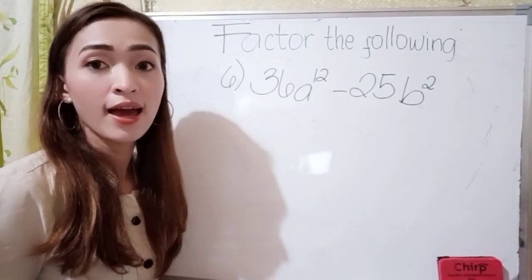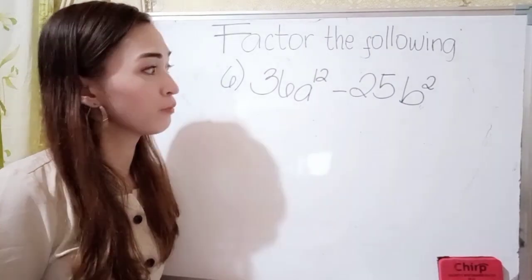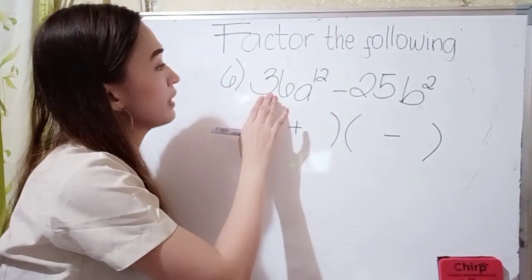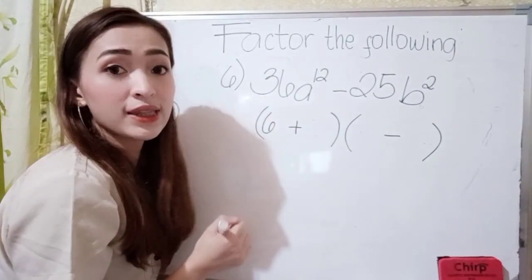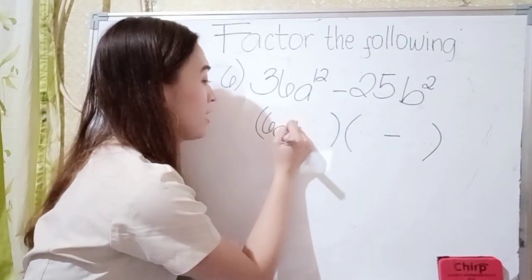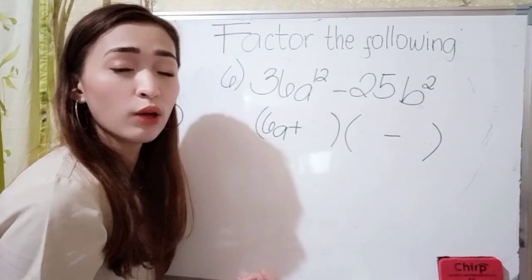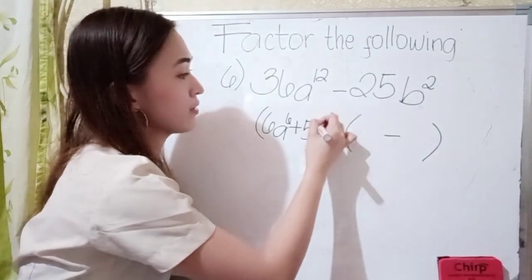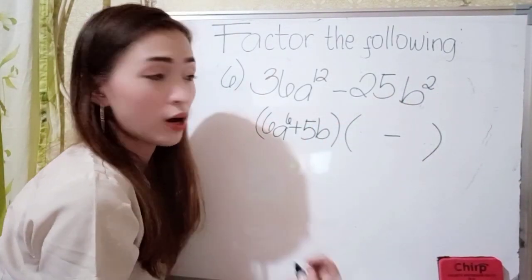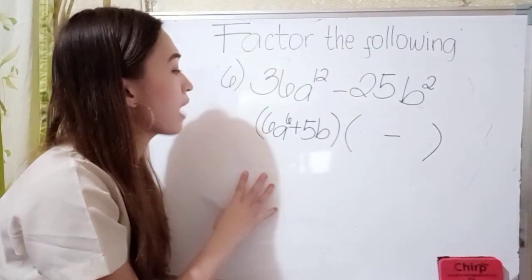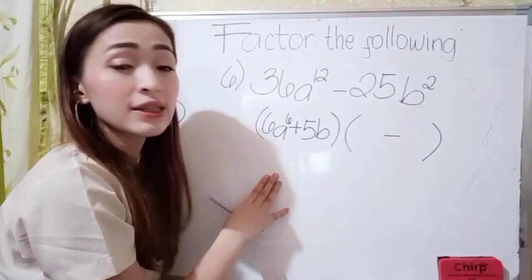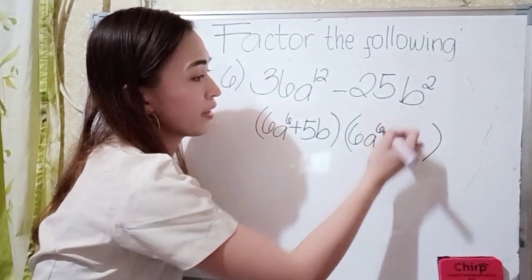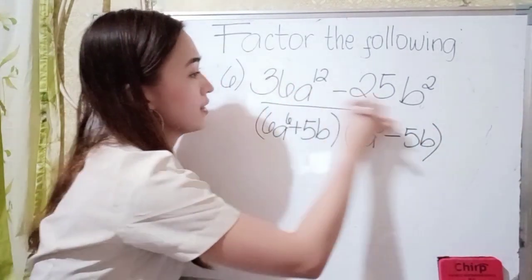For number 6, we have 36a raised to the 12th power minus 25b squared. Write a grouping symbol — left-hand side is positive, right-hand side is negative. What is the square root of 36? It is 6, because 6 times 6 is 36. We have a here, so write a. For the exponent, 12 divided by 2 is 6. Then, what is the square root of 25? It's 5. We have b, and 2 divided by 2 is 1 so we don't write 1. Our final answer is 6a to the 6th power plus 5b, times 6a to the 6th power minus 5b.